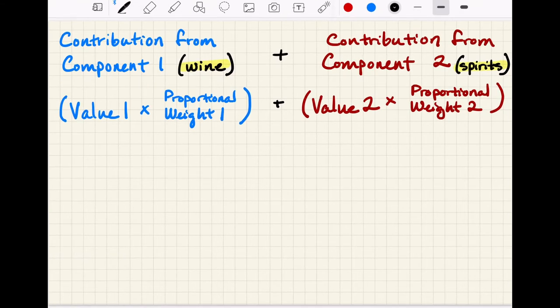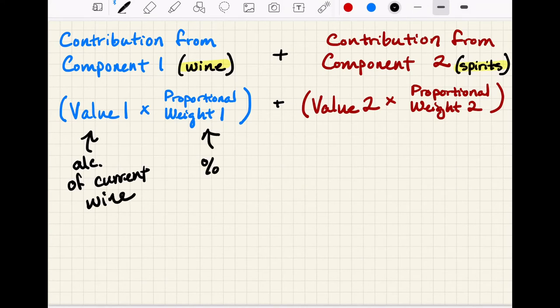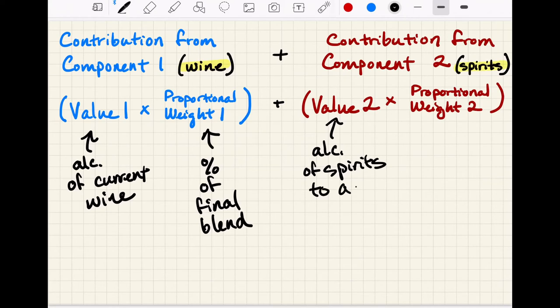So in this case, value number one would be the alcohol of the current wine. And its proportional weight would be its percent of final blend. So how much of that final blend does it represent? And then for component number two, our value would be the alcohol of spirits to add. And our proportional weight of that component would be the percent of the final blend, which is contributed by the spirits.